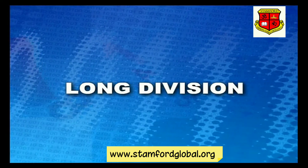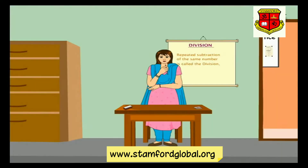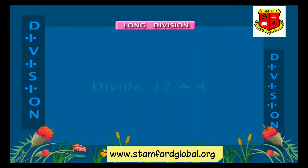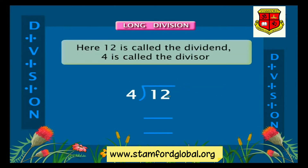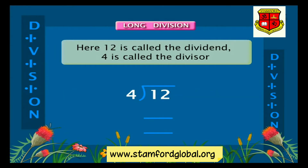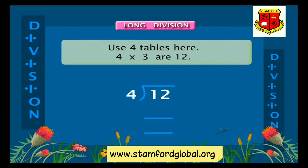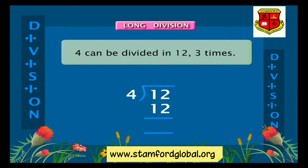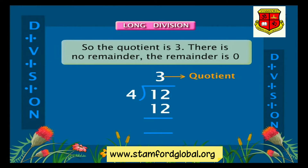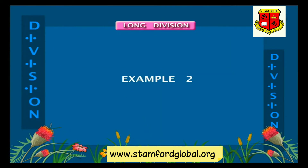Long division. After simple division, let us now learn long division. Example one: divide twelve by four. Here twelve is called the dividend and four is called the divisor. We have to find the quotient. Using the four times table: four threes are twelve, so four can go into twelve three times. The quotient is three and the remainder is zero.